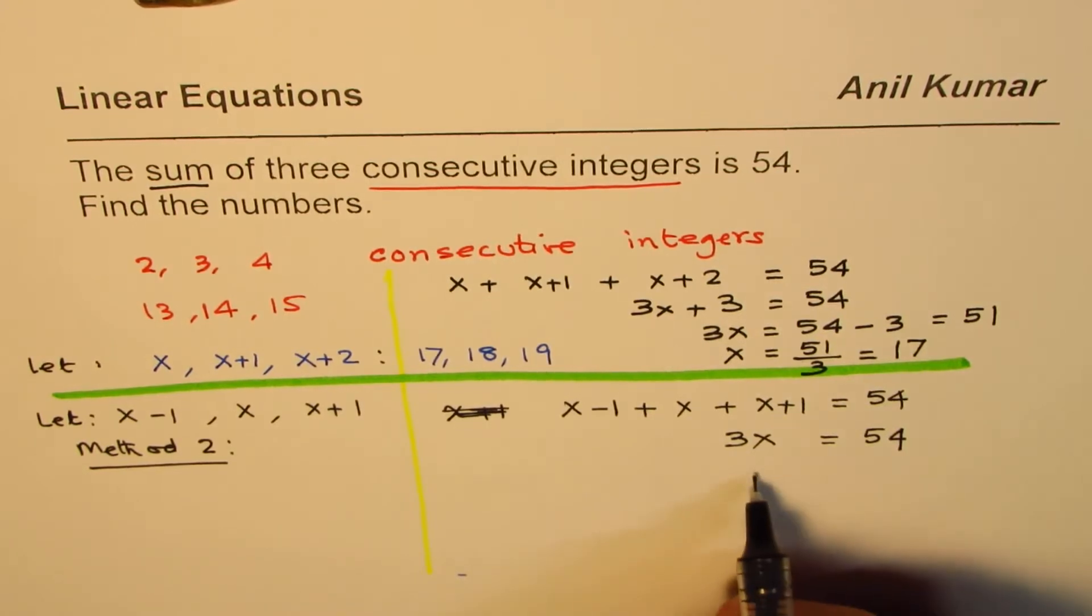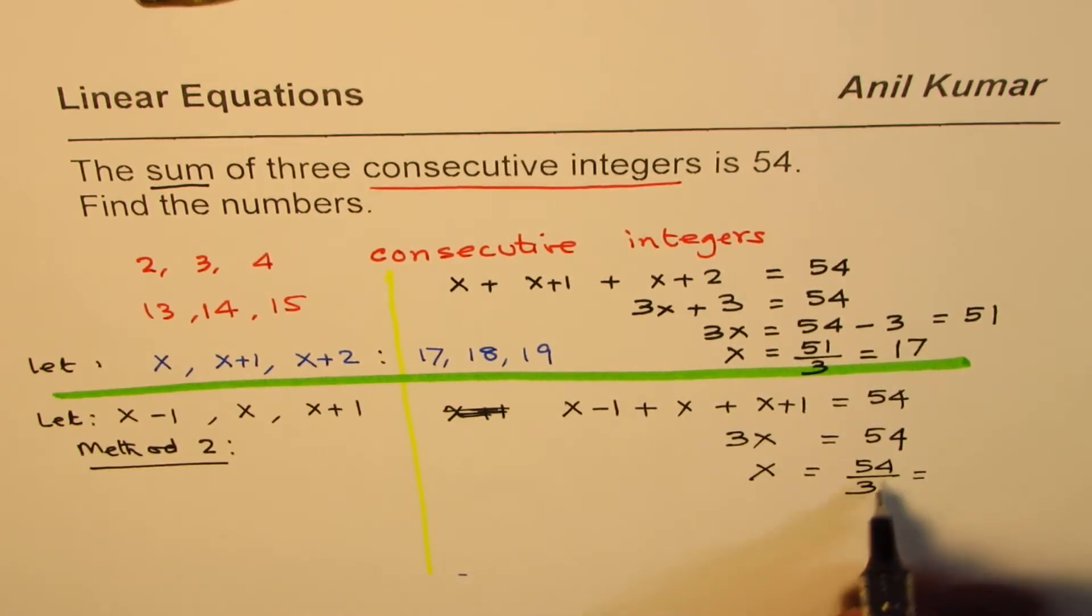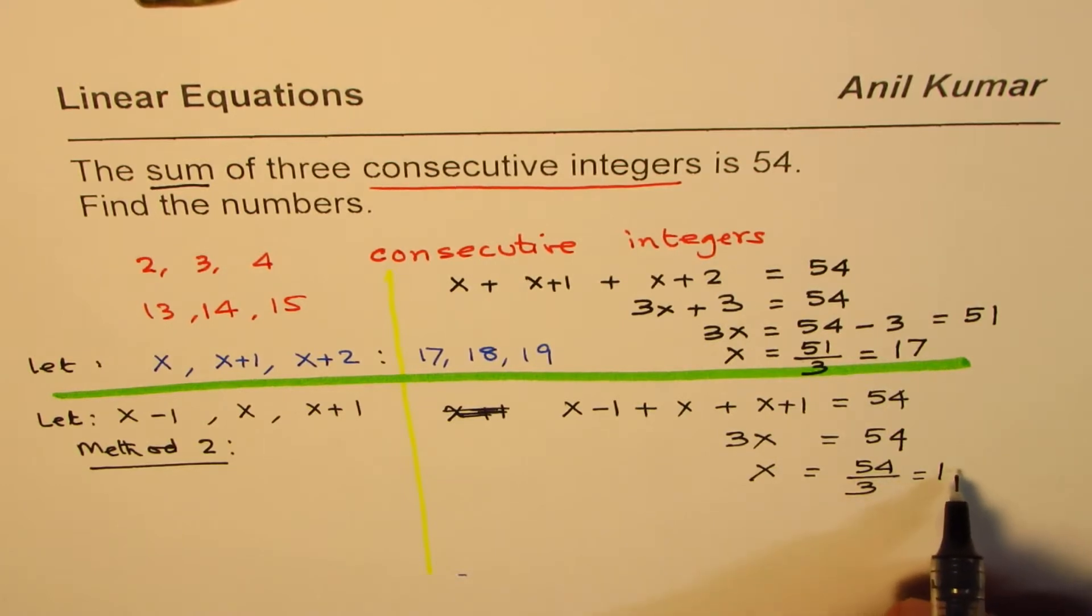Now, what is x equals to? x is 54 divided by 3. And this time, when you divide 54 by 3, 3 goes 1 times. So, we get 24, which is 16. Oh, which is 8. So, 3 times 8 is 24. So, we get x as 18.